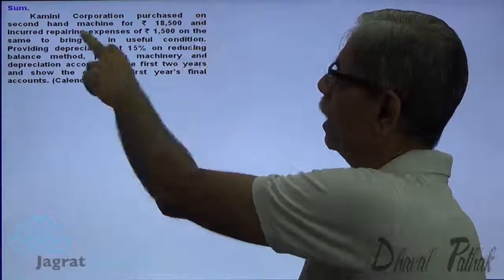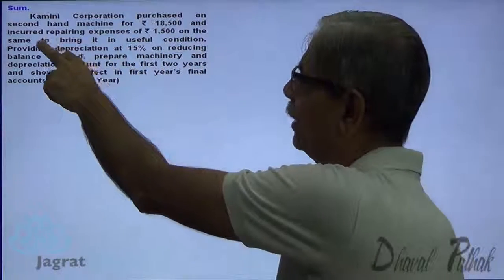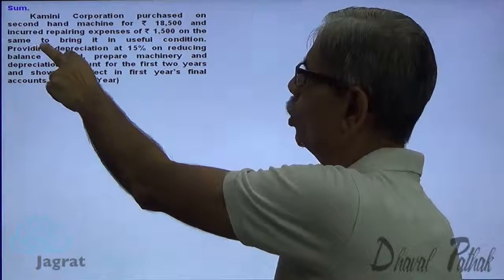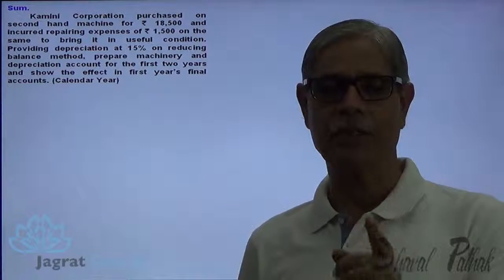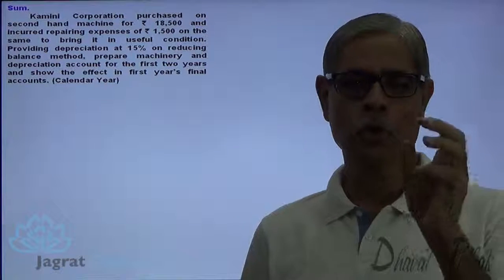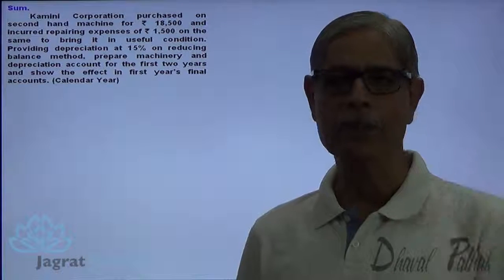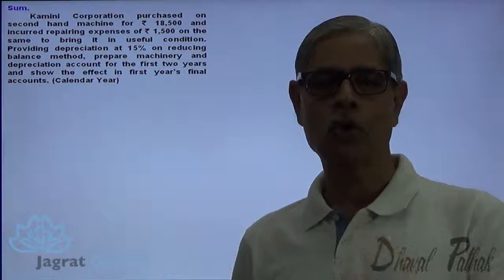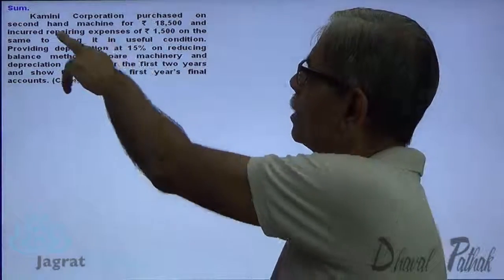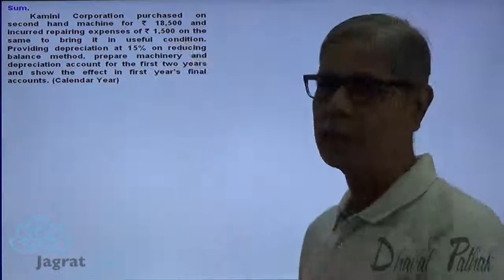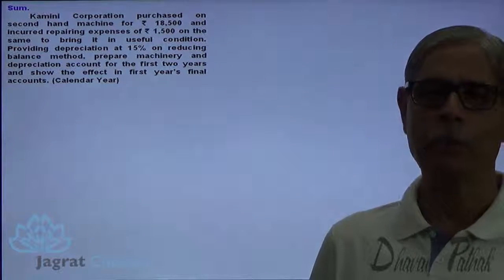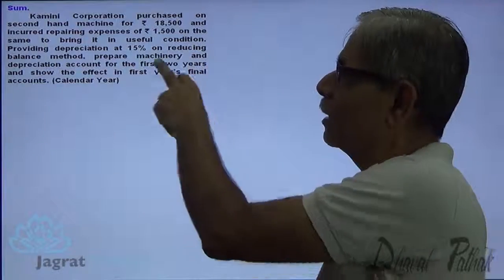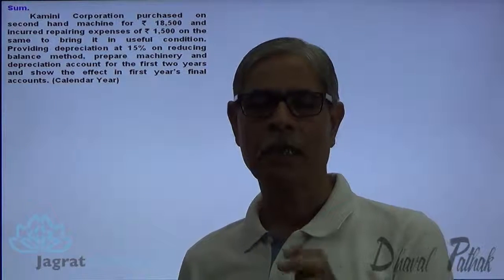Kamini Corporation purchased a second-hand machine for $18,500 and incurred repairing expenses of $1,500 to bring it into a useful condition. When a second-hand asset is purchased and expenses are incurred to make the asset usable, those expenses are to be capitalized and added to the cost of the asset. So the $1,500 repairs expenses must be debited to the machinery account, as they were incurred to bring the machinery into a usable condition.